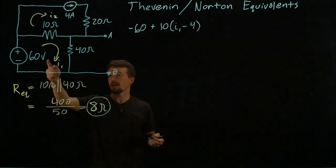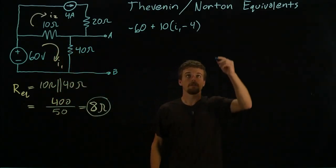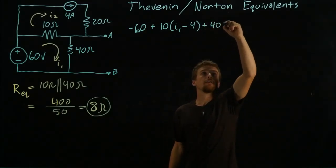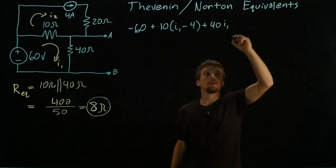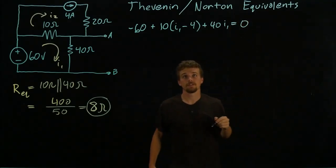And finally we have the voltage drop across this resistor which is 40 ohms times I_1. And that's a closed loop, we can sum those voltages to zero.